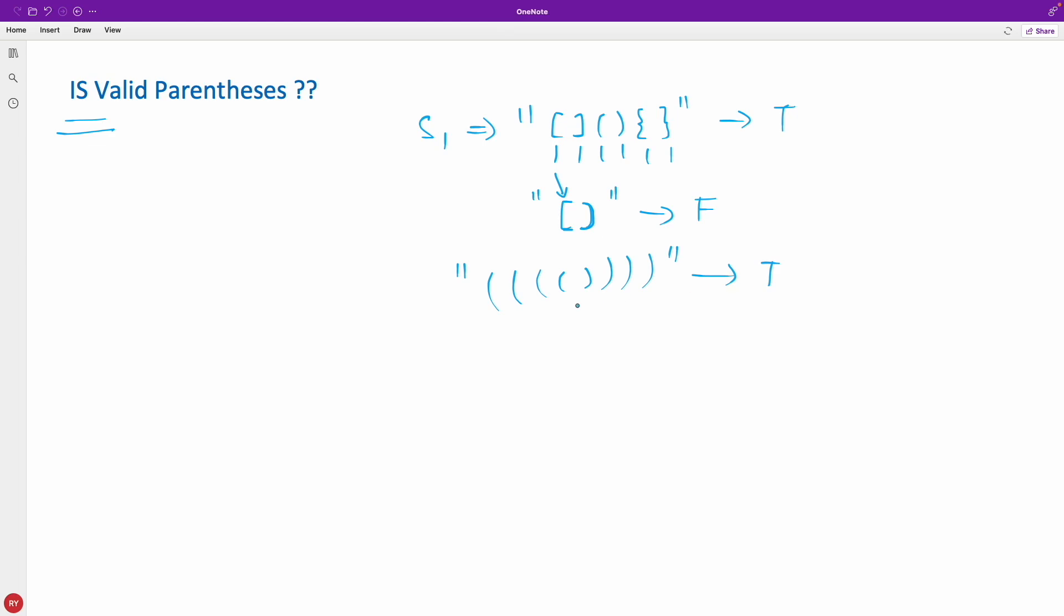And is this a valid string? Yes it is, because this cancels out with this one, this cancels out with this one, this with this and this guy with this guy. You know how parenthesis works from mathematics. Now I think you understand the problem.